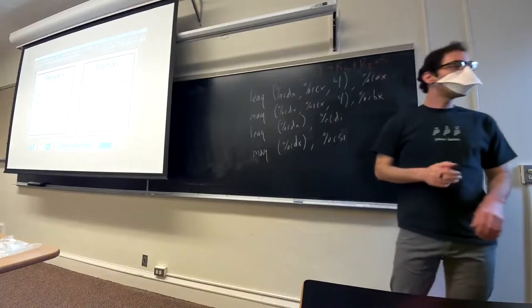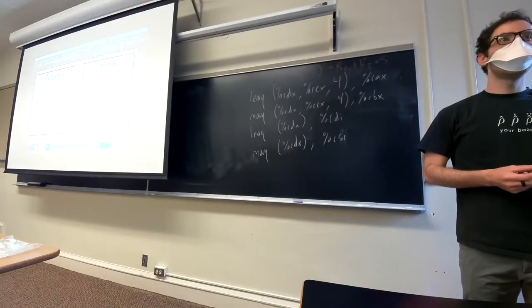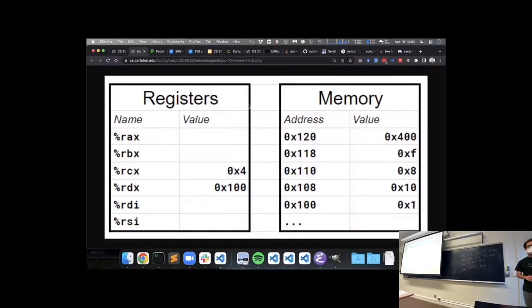What is the result of this first LEA instruction? It computes the address of that, like it computes what that address would be, and then stores that address in the register. What address do you think that would be? It seems like it would be 116. I agree, and if we put 116 in hex, what would that be? Because our base register is 100, and then we're adding 4 times 4, which is 16. If we put that 16 in base 16, we get 10. So hex 100 plus hex 10 give us hex 110.